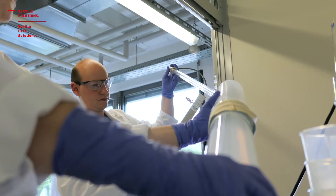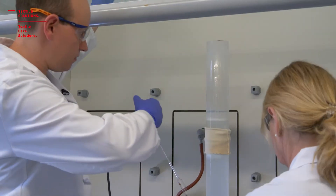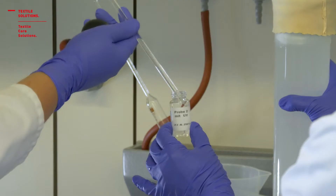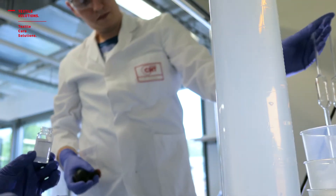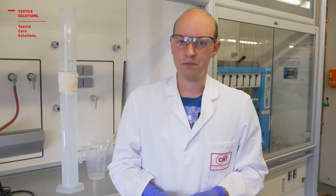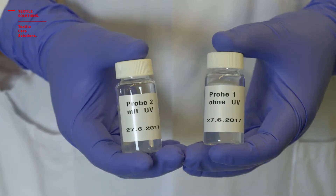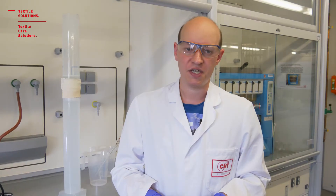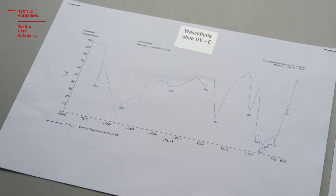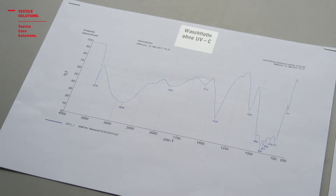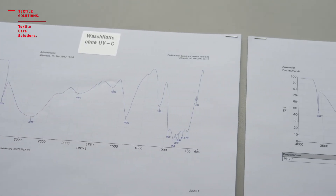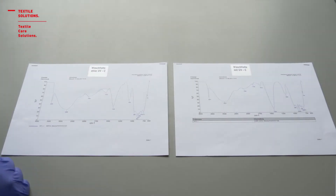After those 180 seconds of exposure time, we take another sample of the wash liquor. So now we have two samples of the wash liquor — with and without UVC energy treatment. We take those two samples and transfer them to our analytical service department. Here we see the result of the IR spectrum without UVC energy treatment, and on the right side the result of the IR spectrum with UVC energy.